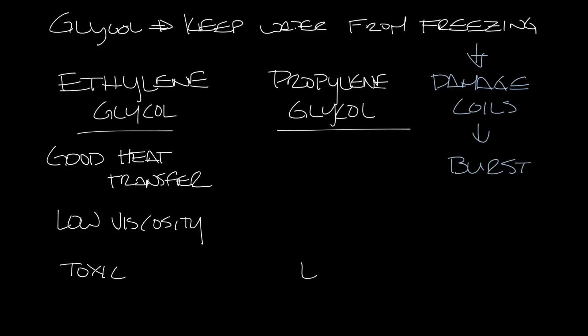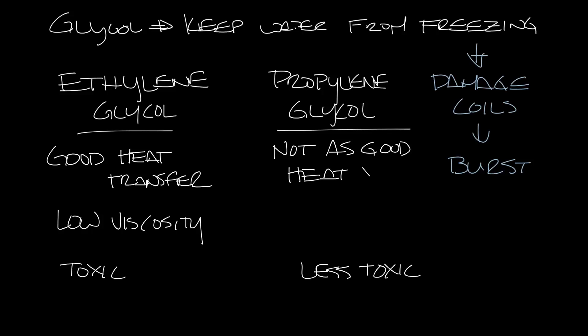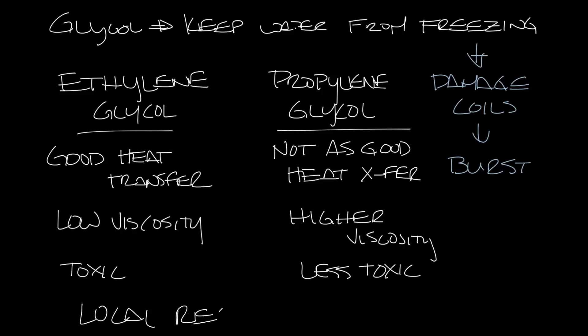Propylene glycol is less toxic, so you'll see this used in food processing applications. But it's not as good at heat transfer and it has a higher viscosity. Your application will help you decide which type of glycol to use, but also local regulations may require the use of propylene glycol.